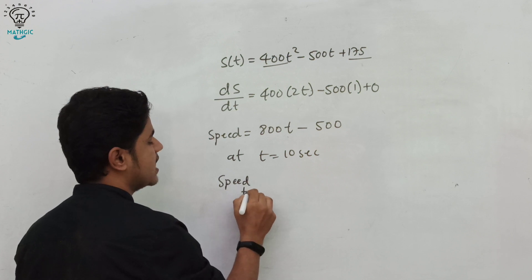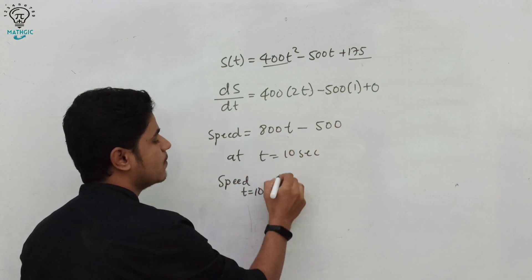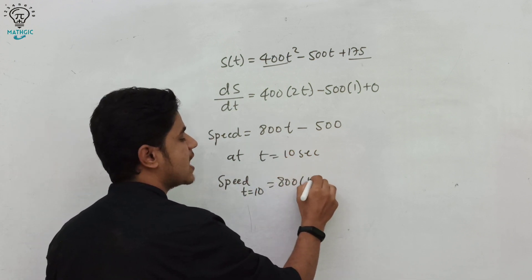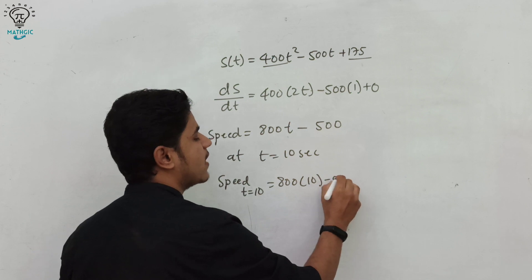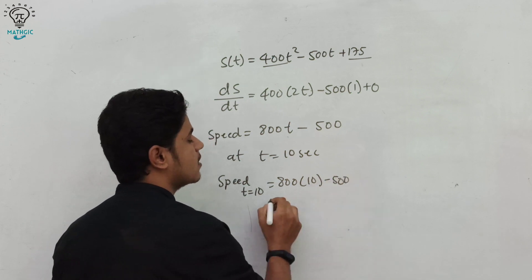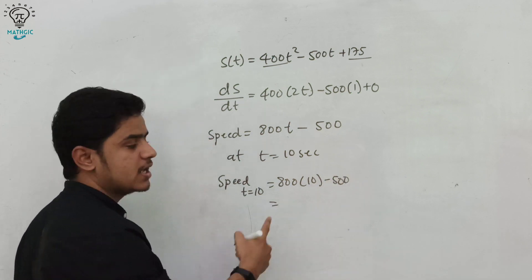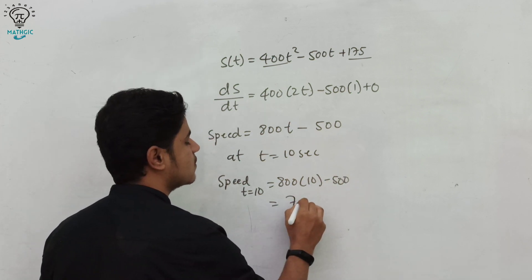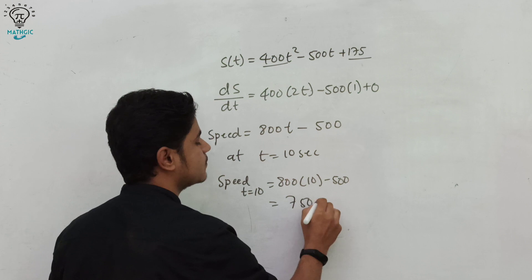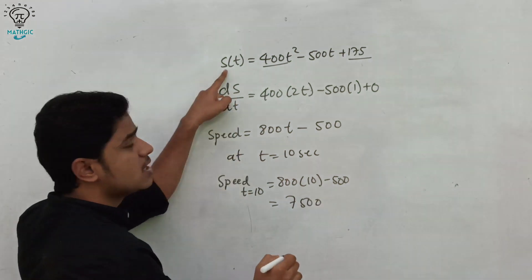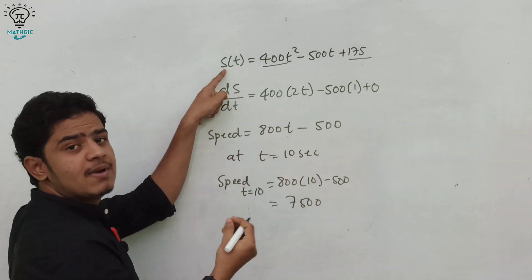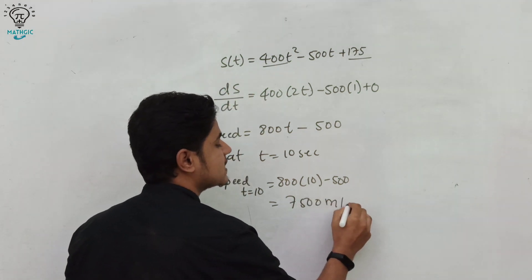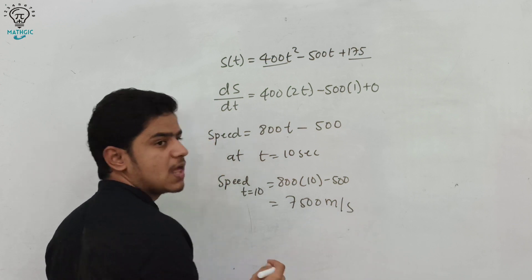At t = 10: speed = 800 × 10 − 500 = 8000 − 500 = 7500. Assuming distance in meters and time in seconds, this gives 7500 meters per second.